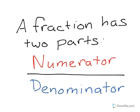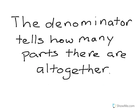A fraction has two parts. We know that there's the numerator and the denominator. The denominator tells how many parts there are all together — so in a group, or if you have a pie, how many pieces there are going to be. That is the denominator: it's how many parts there are all together.